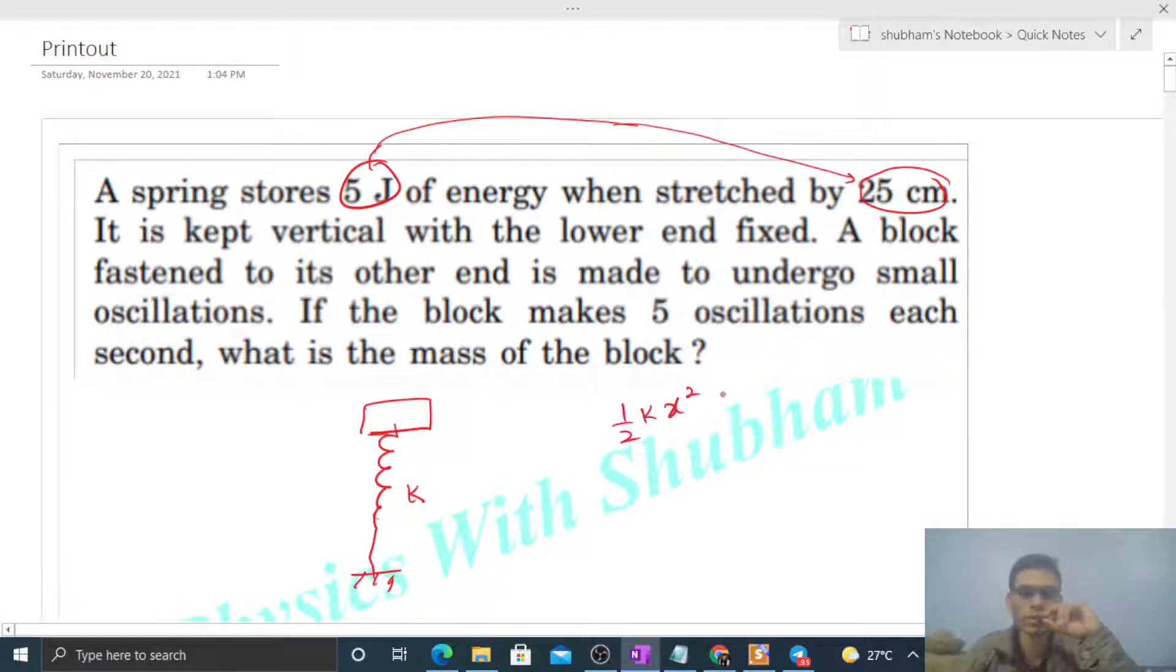The potential energy is half of k into x squared. The energy stored is 5 joules when x is 0.25 meters, or 1/4 meter. So half of k into x squared, that is 1/16. From here we can calculate the value of k, that will be 160 Newton per meter.